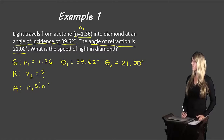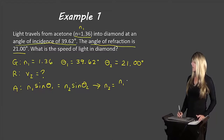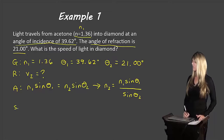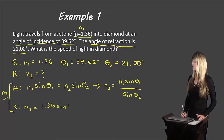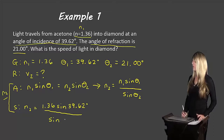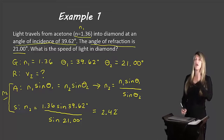Starting with Snell's Law: n1 sine theta 1 equals n2 sine theta 2. Rearranging to solve for n2 gives us n2 equals n1 sine theta 1 over sine theta 2. Substituting: n2 equals 1.36 times sine of 39.62 degrees over sine of 21.00 degrees. If we calculate this, we end up with 2.42. So the index of refraction of diamond is 2.42.